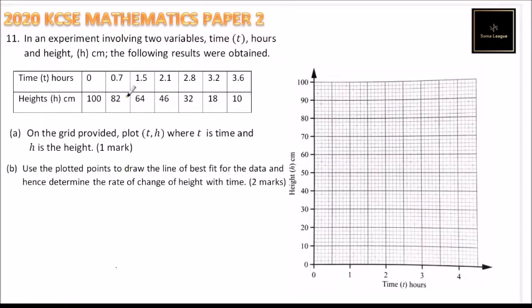This is question number 11 of 2020 KCSE mathematics paper 2. We are told in an experiment involving two variables, time t in hours and height h in centimeters, the following results were obtained.